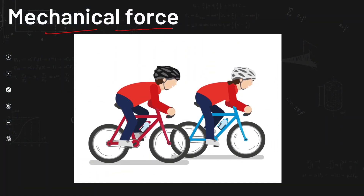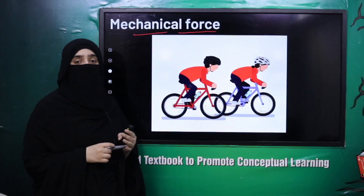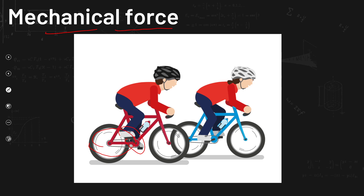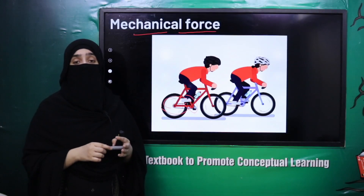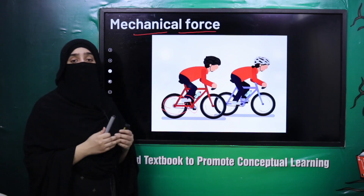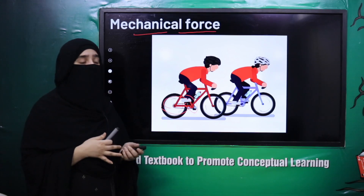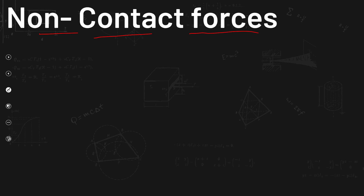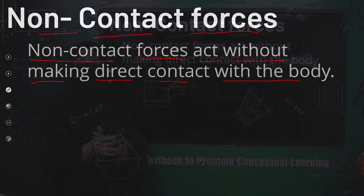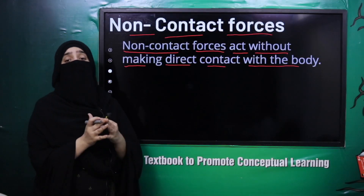Next is mechanical force. Taking the example of cycling — when you apply force and the pedal, chain, and wheels apply force on one another, motion starts. This is also a contact force because two objects are connected and force is applied through that connection. That is mechanical force.